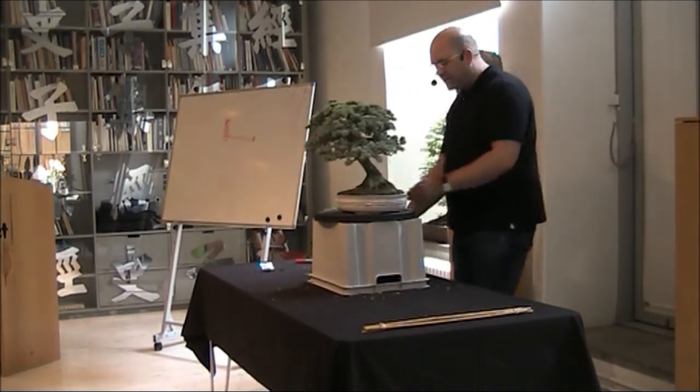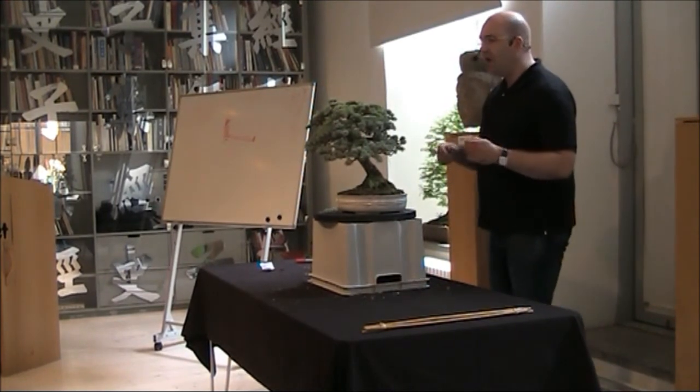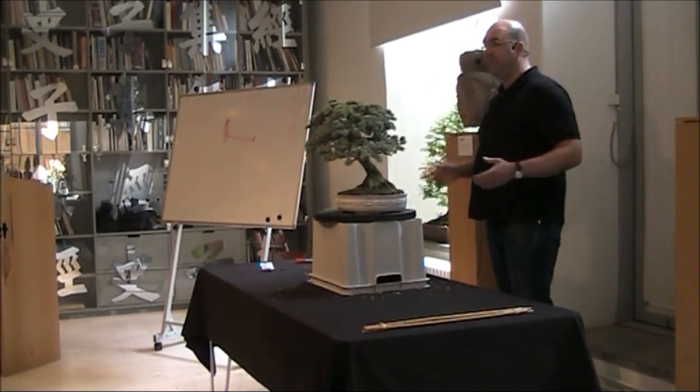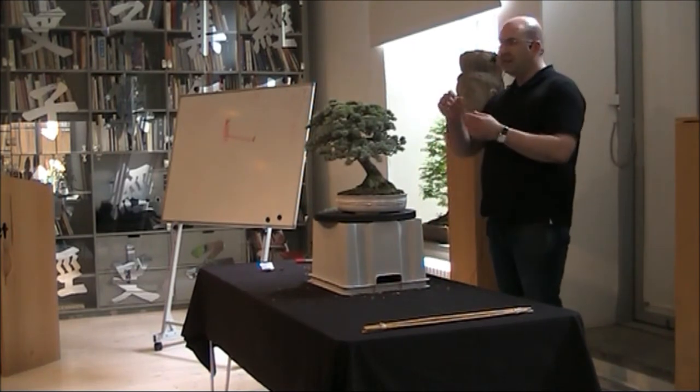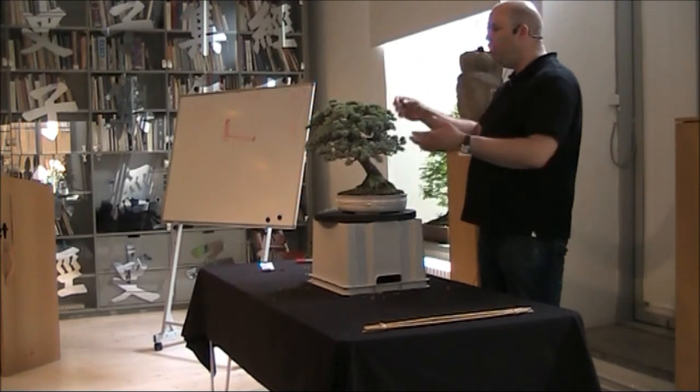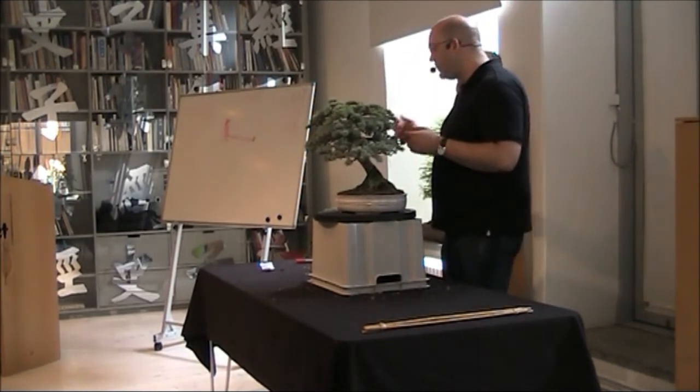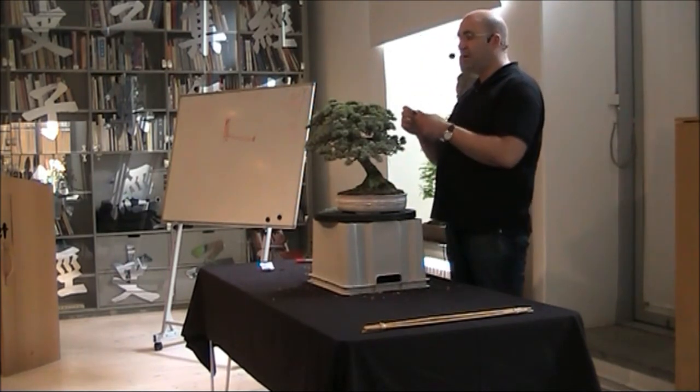When we exhibit a shodan bonsai, often we'll glue the fruits back onto the bonsai. This is at top exhibitions also. Gardenia, kuchinashi, the fruits grow on wild trees. When you cultivate it as a bonsai, you don't get that many fruits, so you have to cut them off of one tree and superglue onto another.